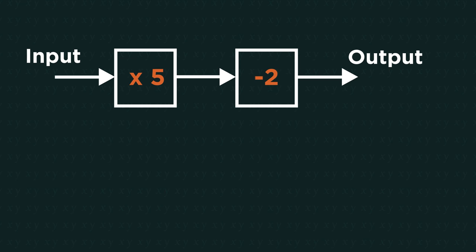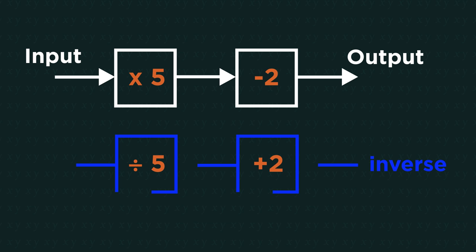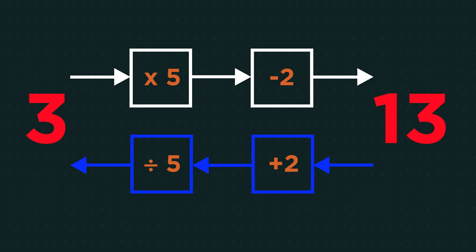So for this function machine, the inverse would add 2 and divide by 5. So 13 add 2 is 15 and divide by 5 is 3.